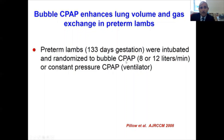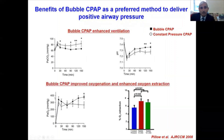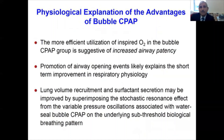They randomized the lambs to bubble CPAP at 8 or 12 liters per minute flow, or constant pressure CPAP via the ventilator circuit. Animals treated with bubble CPAP — shown in solid rectangles — had enhanced ventilation with better pH and lower pCO2 compared to constant pressure CPAP shown in open circles. Bubble CPAP animals also demonstrated improved oxygenation and enhanced oxygen extraction compared to the constant pressure system. They were not able to show any differences between 8 or 12 liters flow.